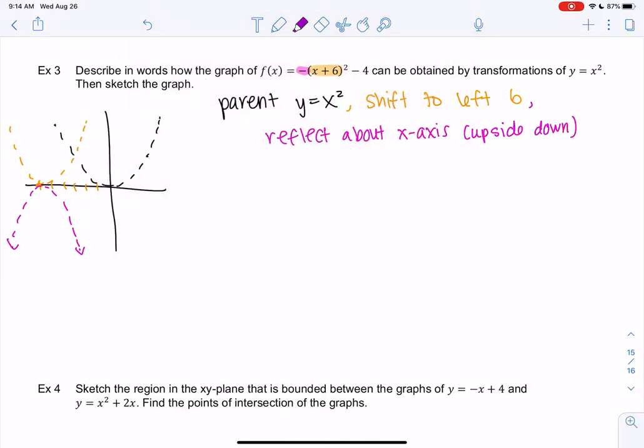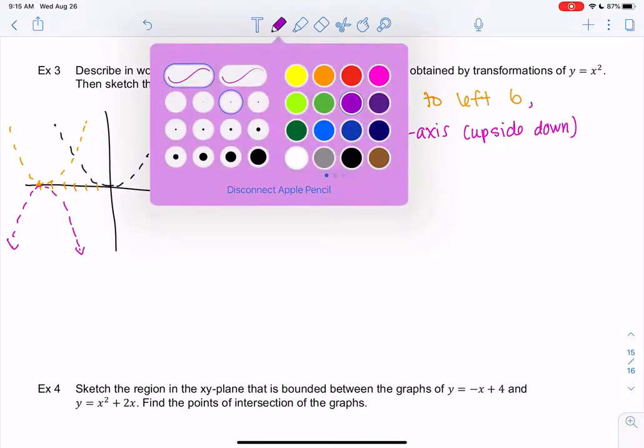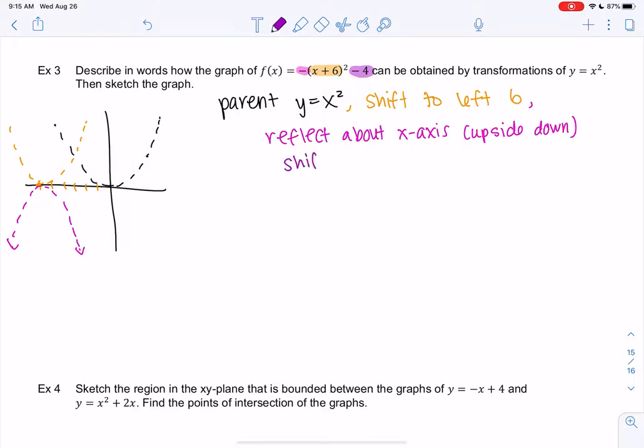And so then from the pink one right now, our new one, the minus 4 tells me to shift down 4. And that will be my graph: 1, 2, 3, 4.